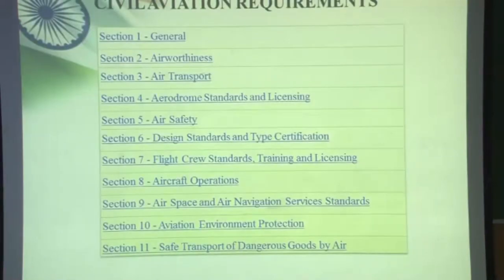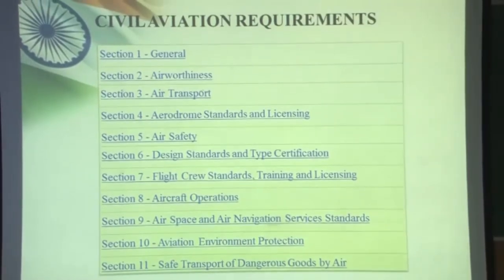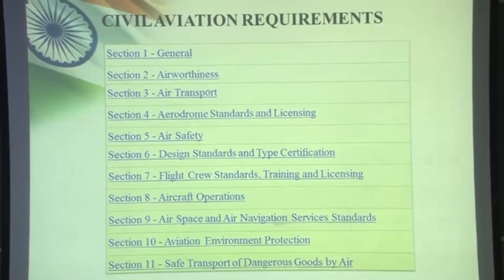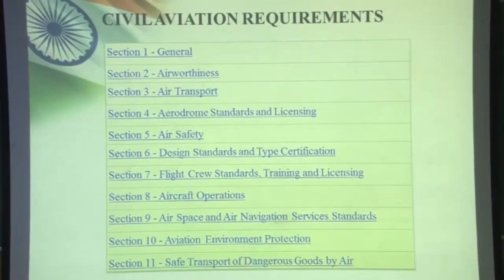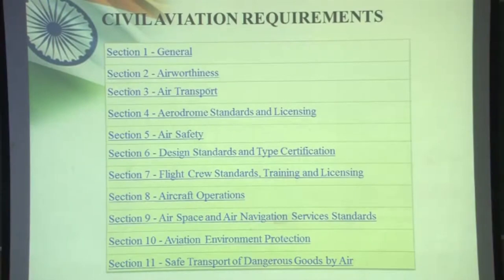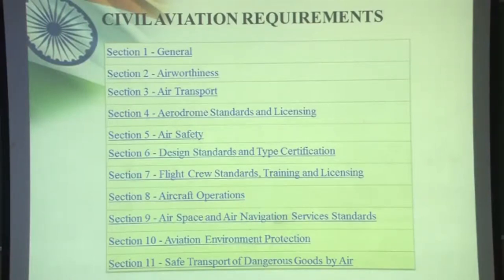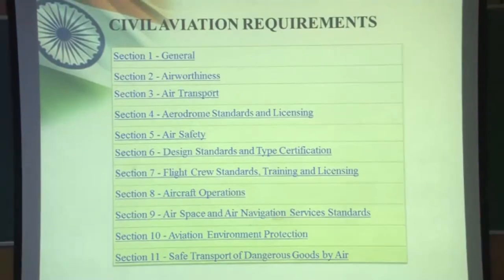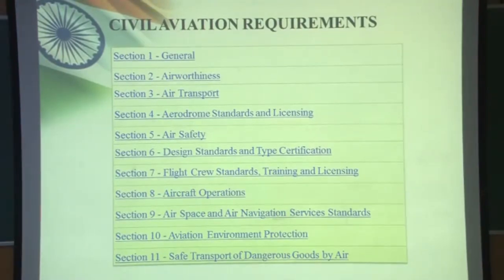The Civil Aviation Requirements, CARs, have various sections: Section 1 General, Section 2 Airworthiness, Section 3 Air Transport, Section 4 Aerodrome Standards and Licensing, Section 5 Air Safety, Section 6 Design Standards and Type Certification, Section 7 Flight Crew Standards Training and Licensing, Section 8 Aircraft Operations, Section 9 Air Space and Air Navigation Services Standards, Section 10 Aviation Environment Protection, Section 11 Safe Transport of Dangerous Goods by Air. Aircraft maintenance is mainly concerned with Section 2, Airworthiness.